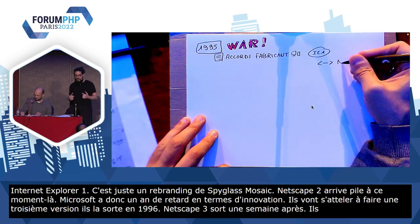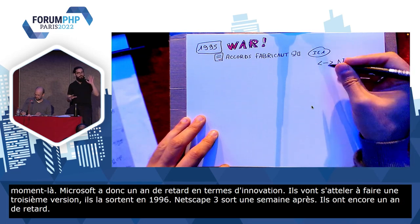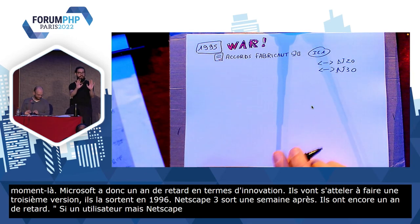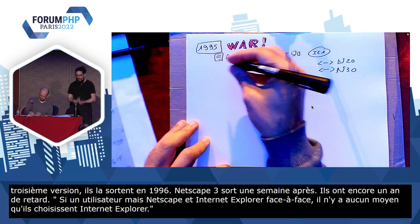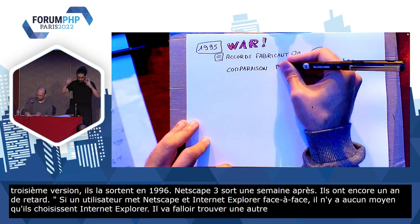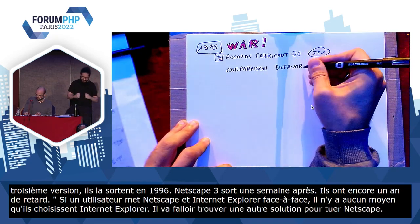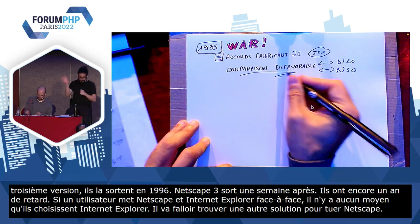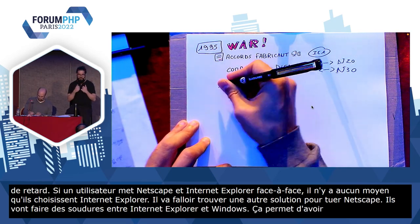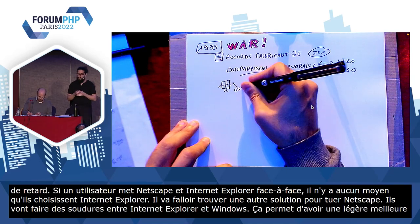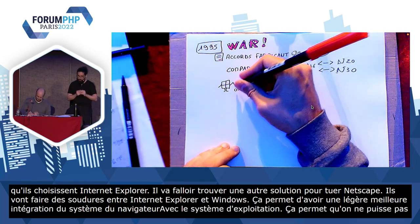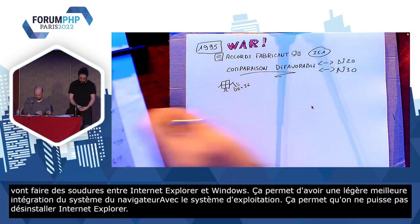Et donc là, ils se rendent compte — et là aussi c'est une citation — que si un utilisateur met Netscape et Internet Explorer face à face, il n'y a aucun moyen qu'ils choisissent Internet Explorer. Donc, il va falloir trouver une autre solution pour tuer Netscape. Et donc là, ils vont faire ce qu'ils appellent des « soudures inutiles » dans le procès, entre Internet Explorer et Windows. On est sur la version Windows 95-98. Ça permet d'avoir une légère meilleure intégration du navigateur avec le système d'exploitation, mais surtout ça permet qu'on ne puisse pas le désinstaller et qu'on l'ait par défaut.